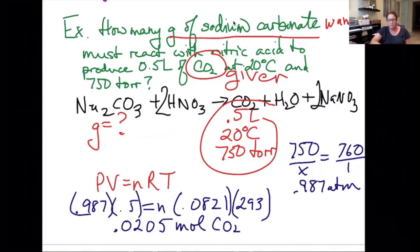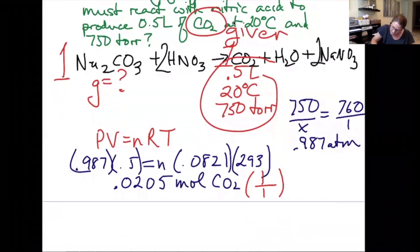I've done my first step, which is where I get moles. My second step is I'm going to be doing my mole ratio where I do want over given. My want is the sodium carbonate, which has a coefficient of one. My given is the CO2, which also has a coefficient of one. Even though it's a one-to-one ratio, I'm going to show my work, and we get 0.0205 moles of Na2CO3.